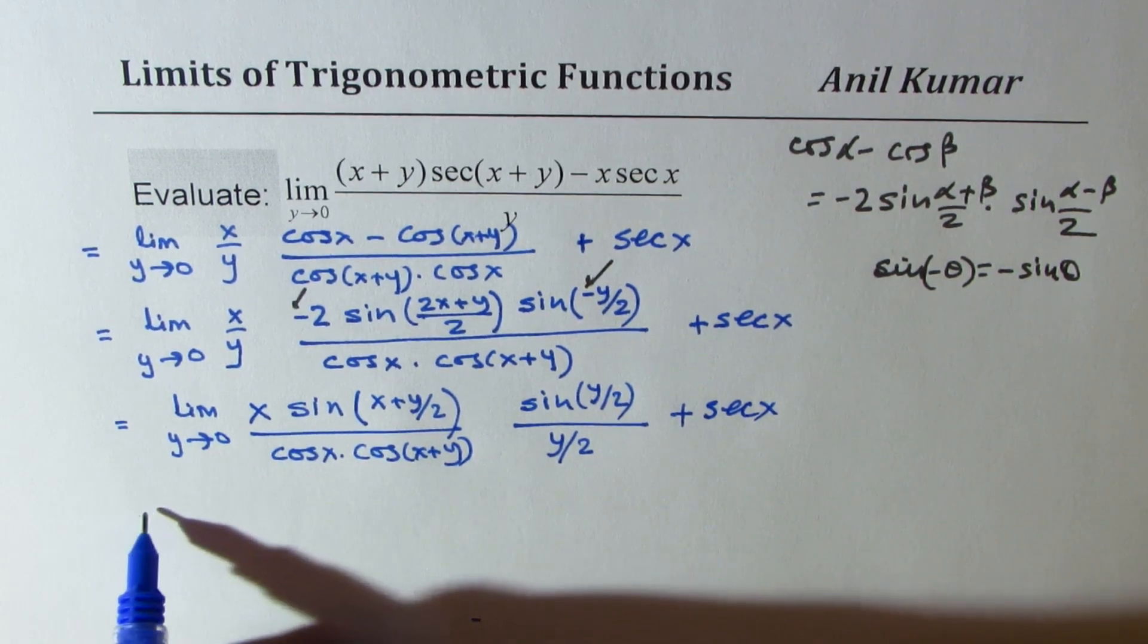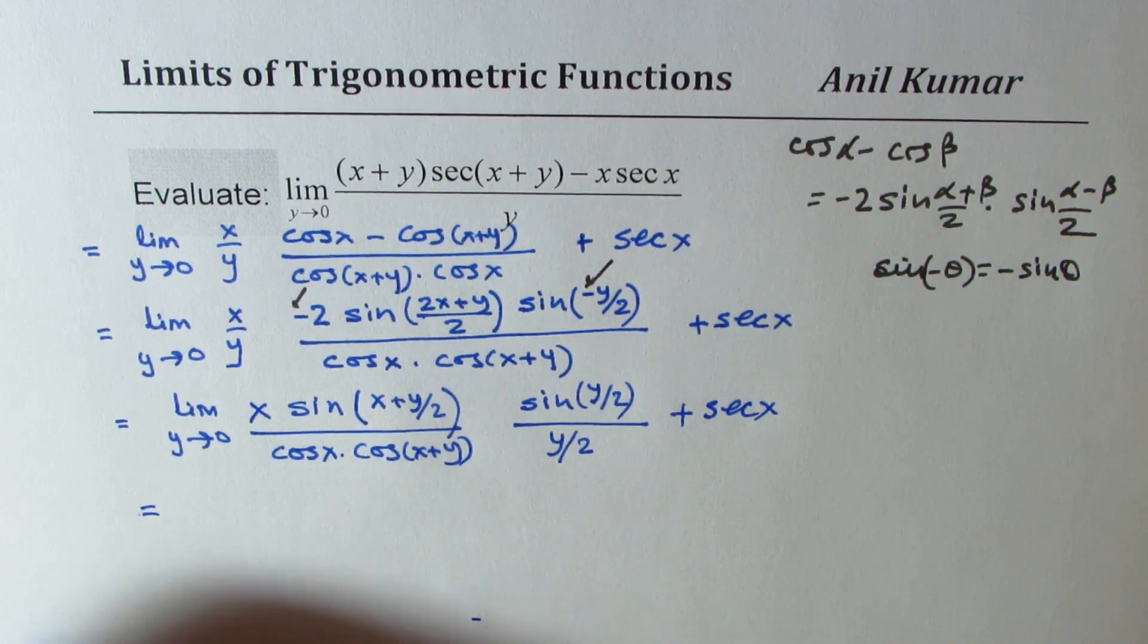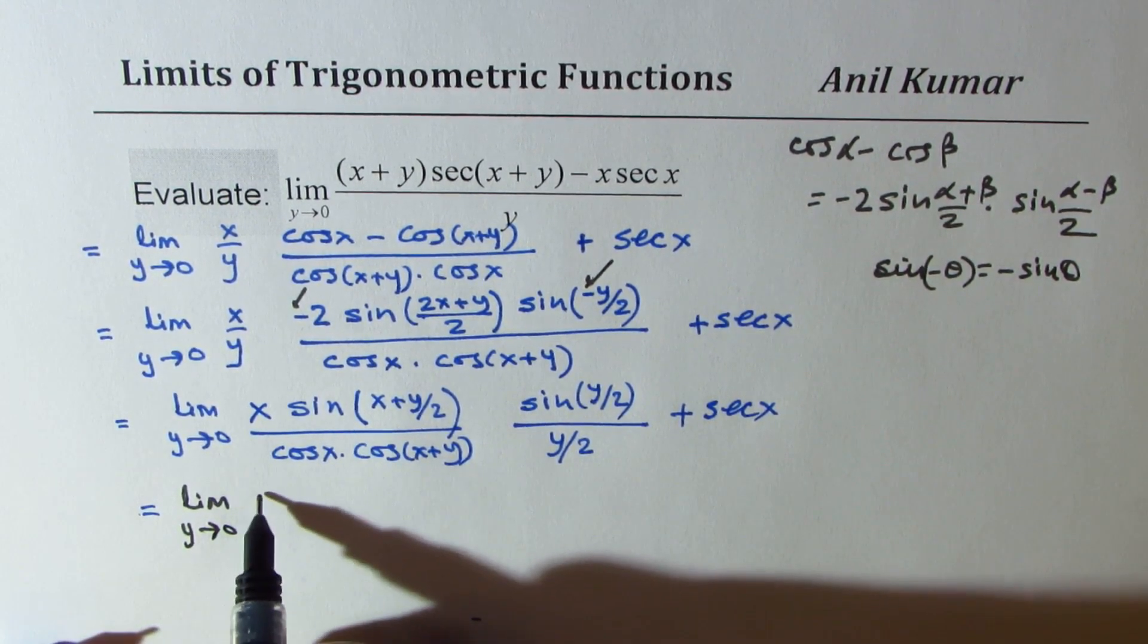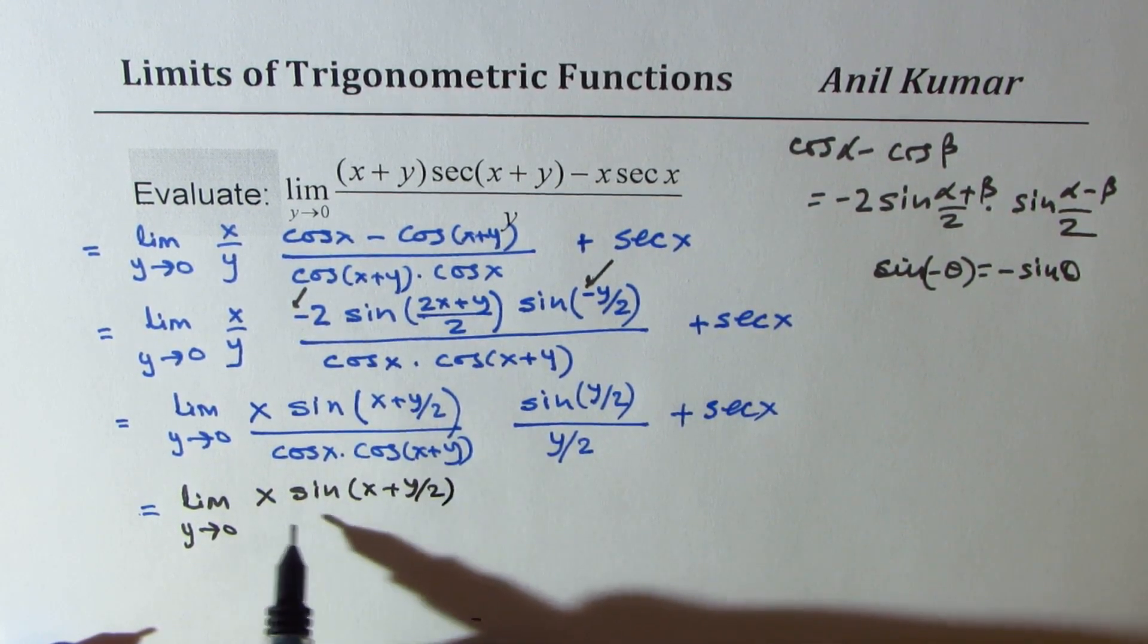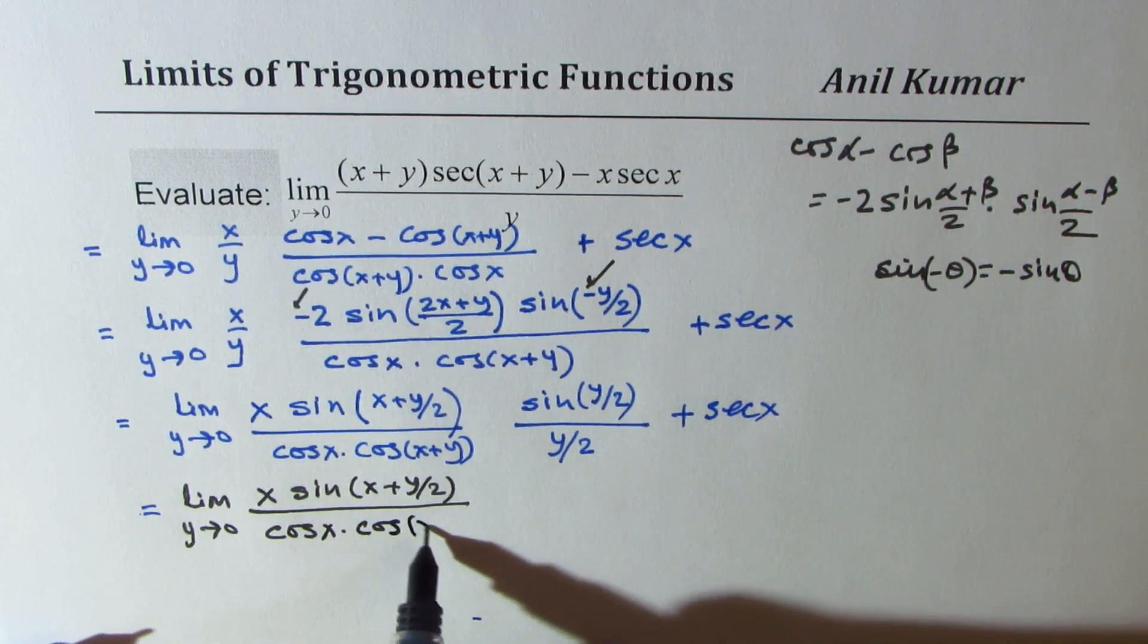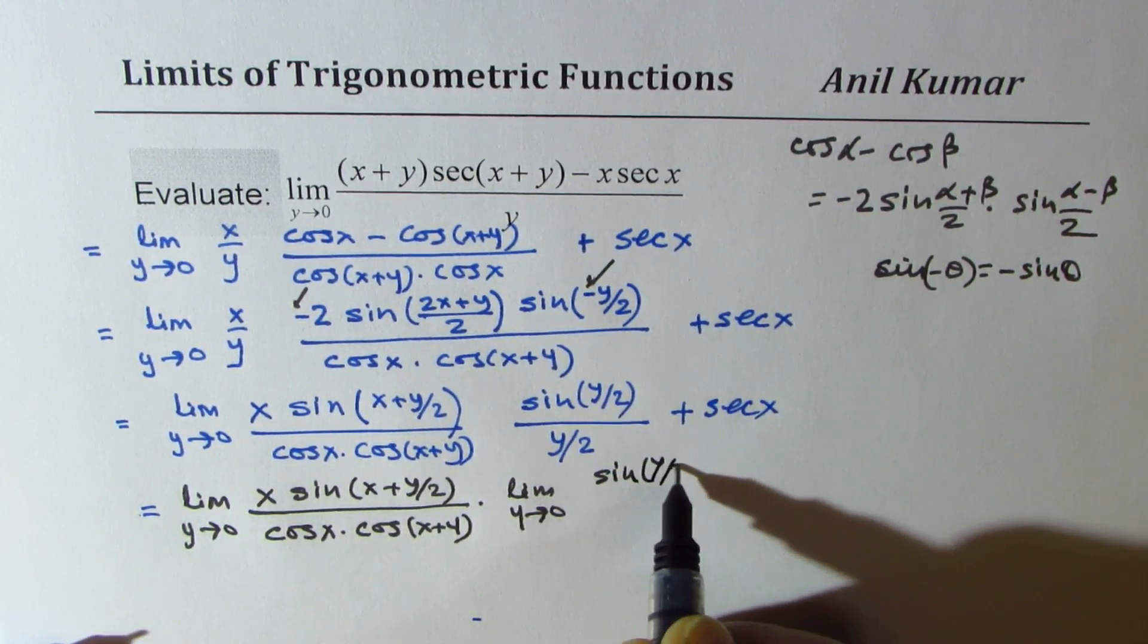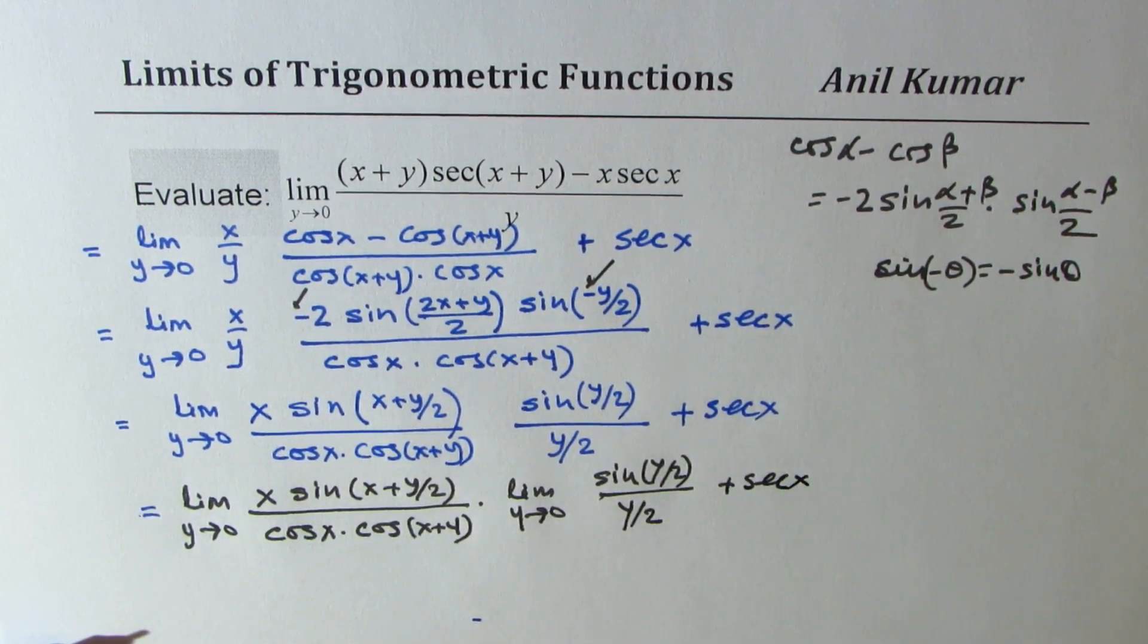So now let's apply the limit. So when you apply it on this side we can rewrite this as, we get limit y approaches 0 on x sine of x plus y by 2 over cos x times cos of x plus y times limit y approaches 0 for sine y by 2 over y by 2. Is it okay? Plus secant x. Do you see that?